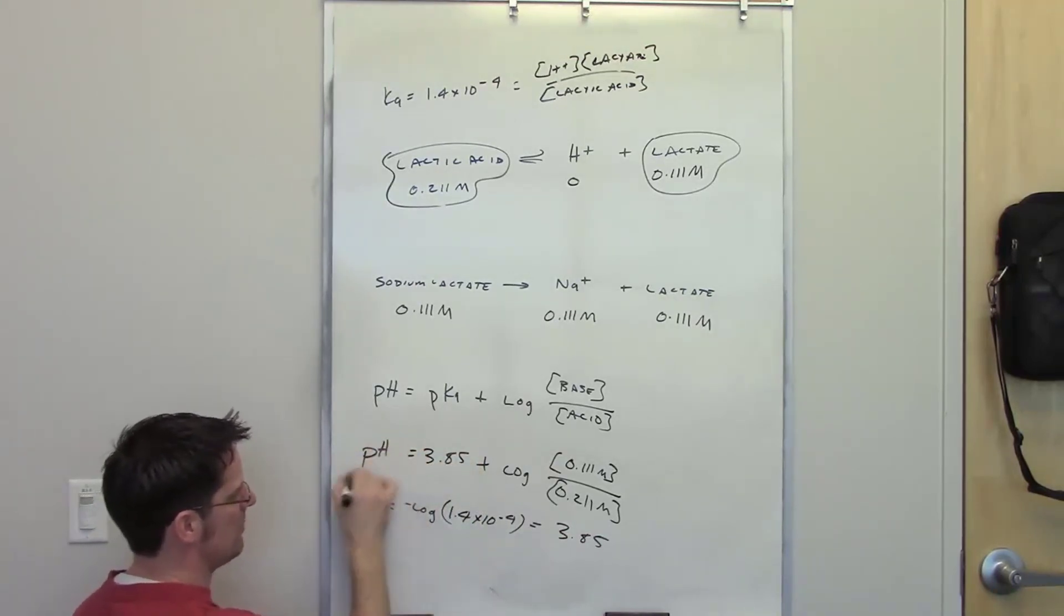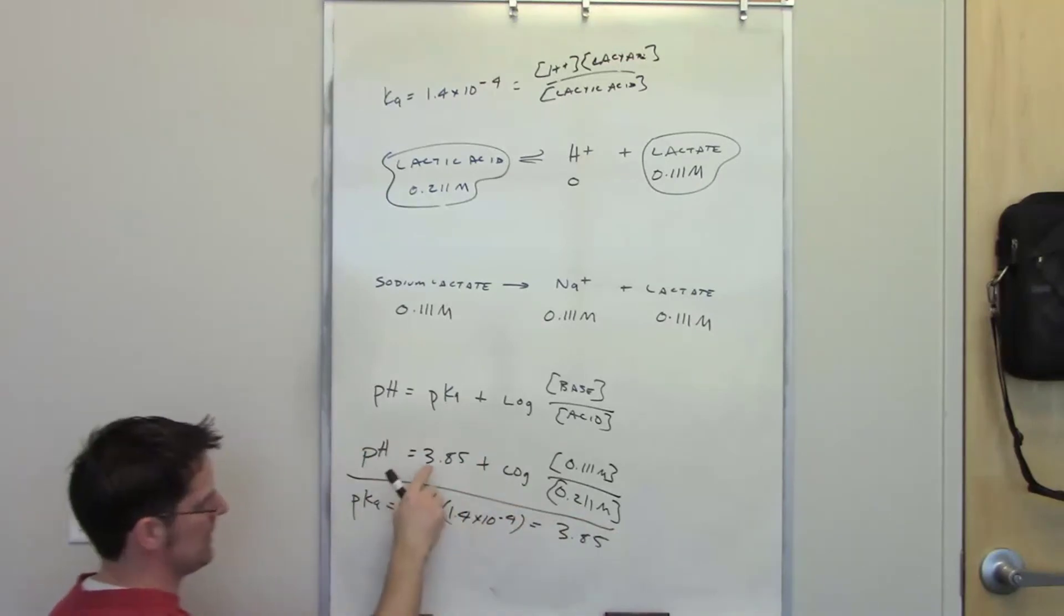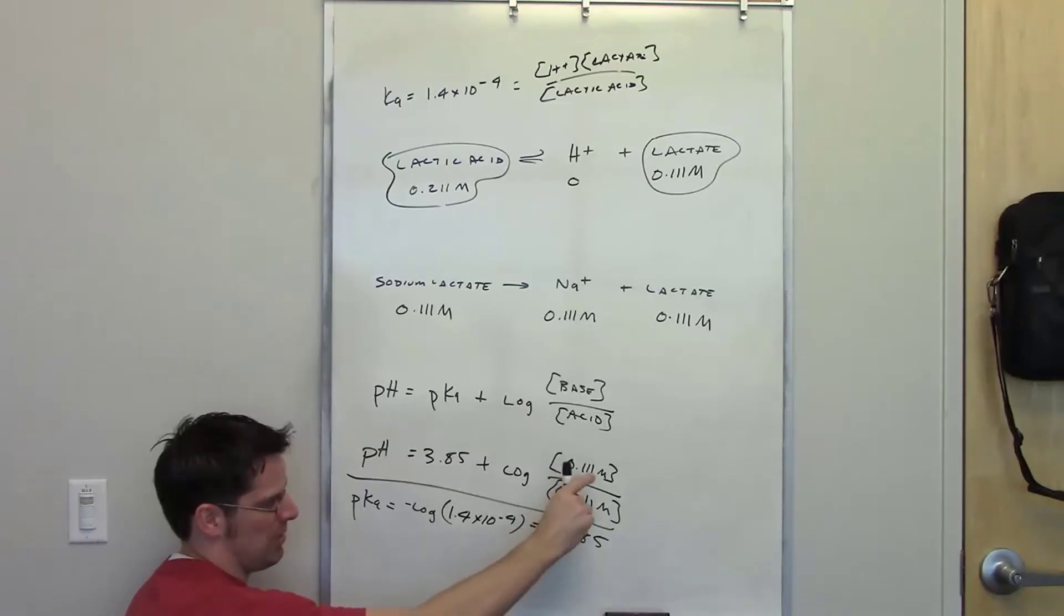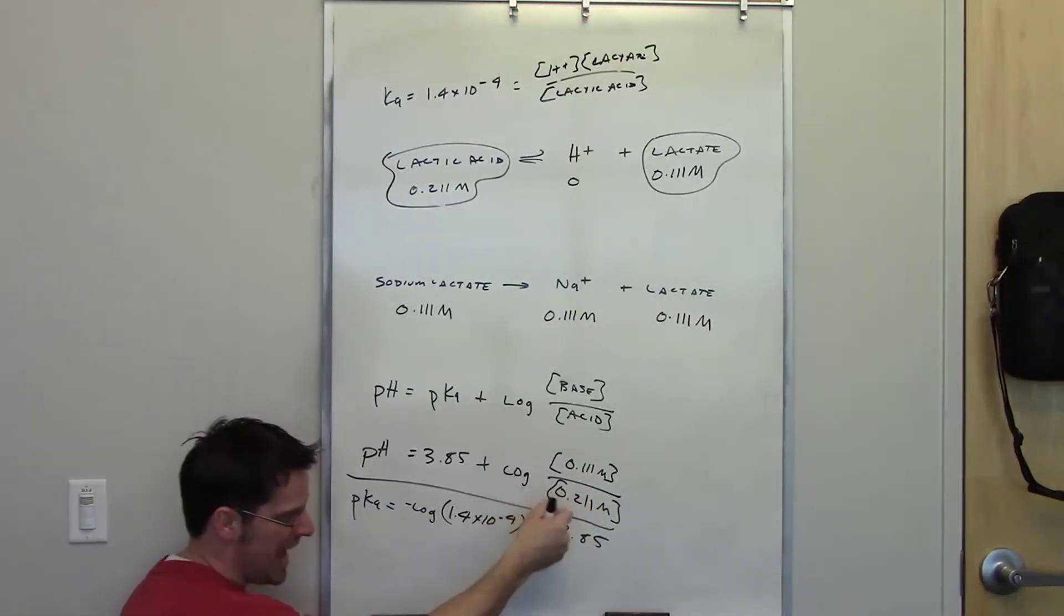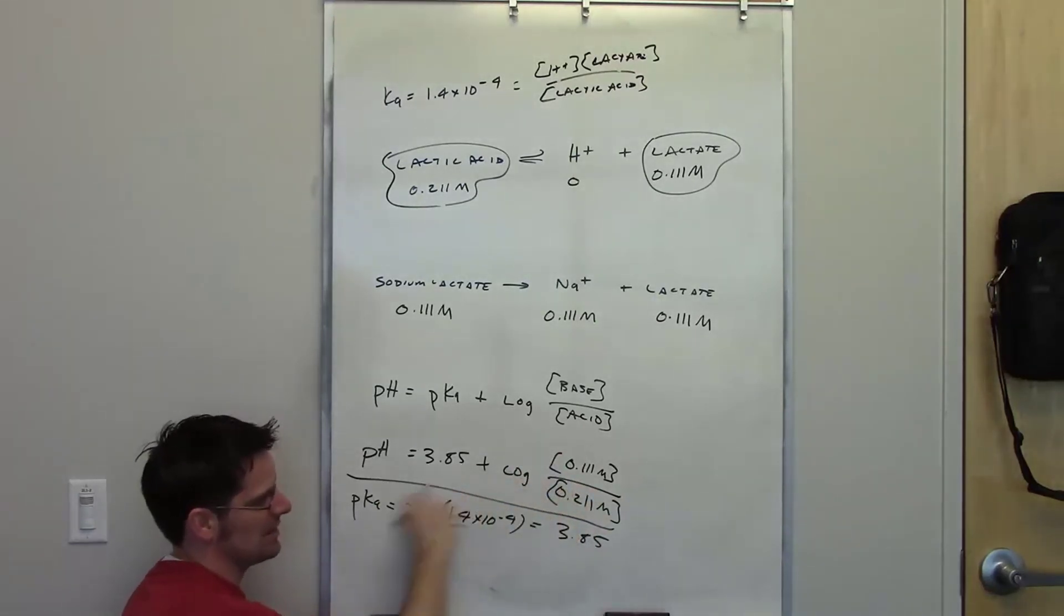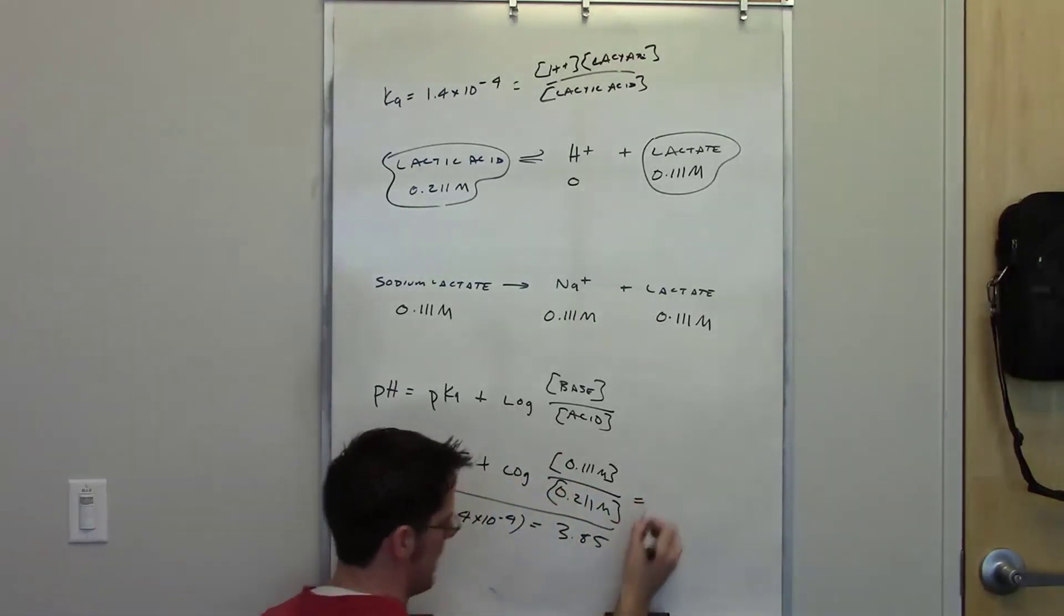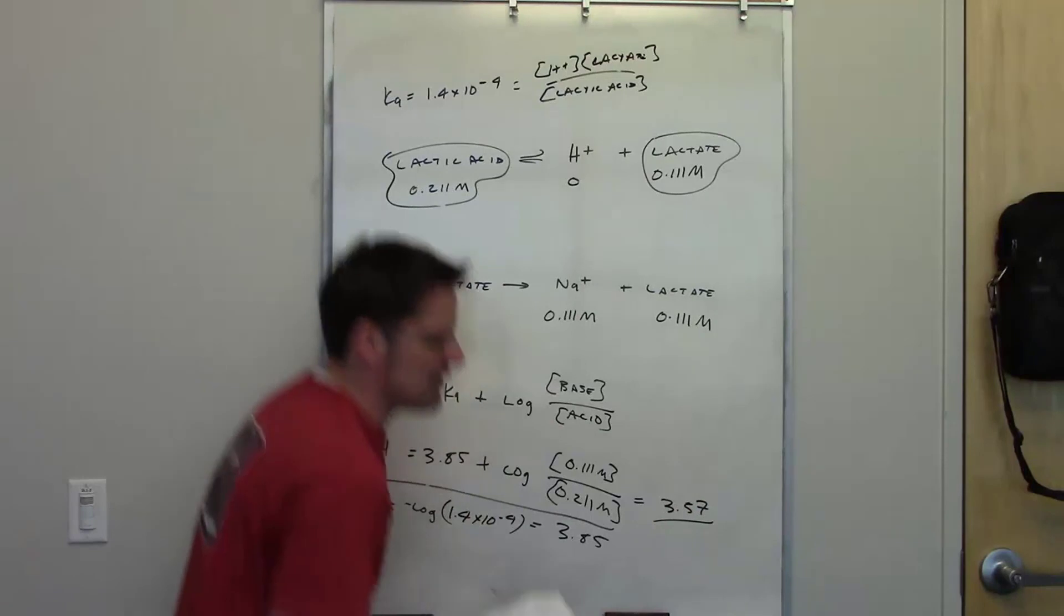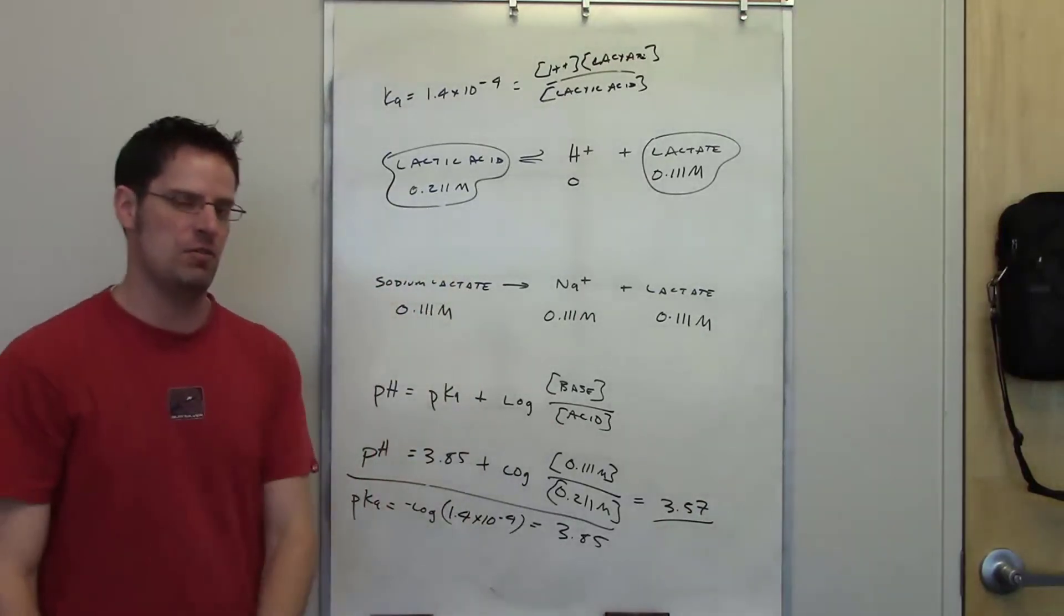So the pH of this equilibrium system is going to be equal to 3.85 plus the log of 0.111 divided by 0.211. So I'll mathematically take this number divided by that number and get a new number. I take the log of that, that gives me this overall term, and I add that to 3.85. When I do that, the final answer that I end up getting comes to 3.57, which you'll see is the same pH that we calculated using the common ion effect approach.